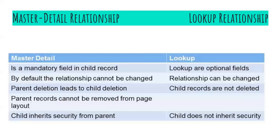In a master-detail relationship, the child record has a mandatory field for the relationship. In a lookup relationship it is optional by default. The relationship type cannot be changed from master-detail to lookup, but a lookup relationship can be changed to master-detail. Parent deletion leads to child deletion — cascading deletion — meaning when the master record is deleted, the child record is automatically deleted. In a lookup relationship, deleting the master record does not delete the child record.